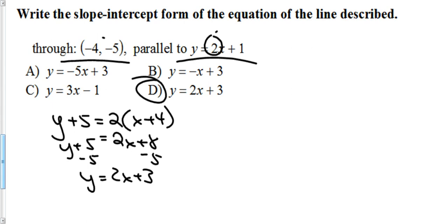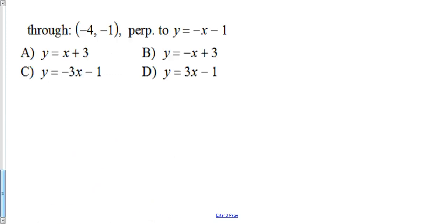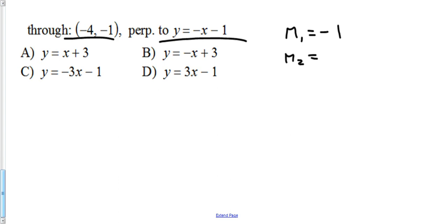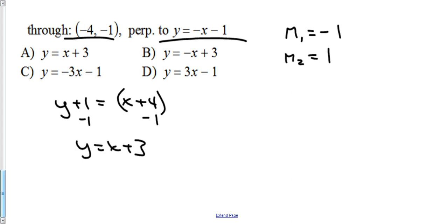One more perpendicular example: the original line has slope −1 (since −x means slope −1). The negative reciprocal of −1 is +1. Through the given point: y + 1 = 1(x + 4). Subtract 1 from both sides: y = x + 3. Multiplying the two slopes (−1)(+1) = −1, confirming perpendicularity. That's 2-4, more about linear equations.